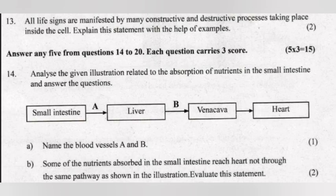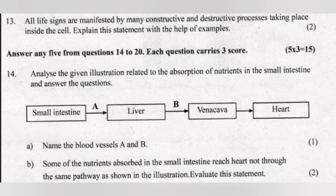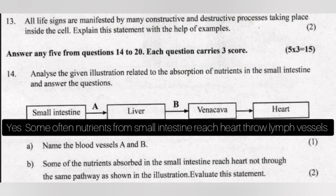Question 14: Analyze the illustration related to the absorption of nutrients in the small intestine. A — Name blood vessels A and B. Answer: A — Portal vein. B — Hepatic vein. B — Some nutrients absorbed in the small intestine reach the heart not through the same pathway shown. Evaluate. Answer: Yes, some nutrients from the small intestine reach the heart through the lymphatics.